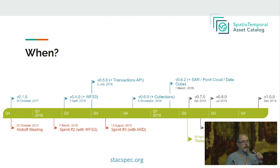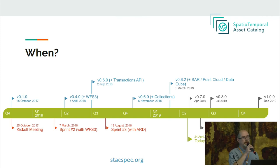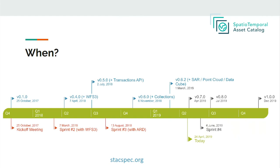The Stack spec started about a year and a half ago on the tail end of State of the Map US in Boulder, and it's been rapidly iterated on. The way we've been developing it is by focusing on developing the spec and then implementing it — the implementations help inform what the spec should look like. Rather than trying to come up with a specification in a room with a bunch of people and just assuming it'll work, we try it out: let's index catalogs, let's deal with a bunch of data like Landsat or Sentinel where you have millions of scenes, and see how the searching works and what needs to be improved.